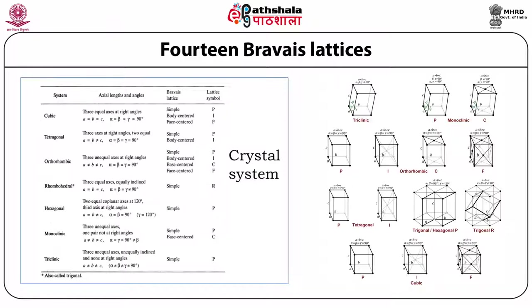When we talk about base-centered C-type, the face contains the A and B axes. These four lattice types distributed among the seven crystal systems total 14 different types of lattices, known as the 14 Bravais lattices belonging to the seven crystal systems. Whether your crystal comes from a small molecule or macromolecule, there are always only 14 Bravais lattices.